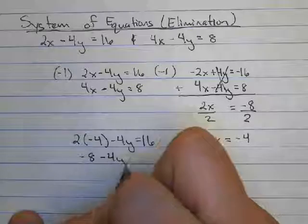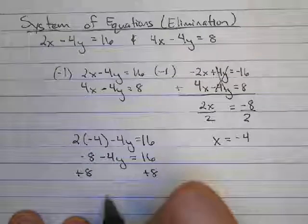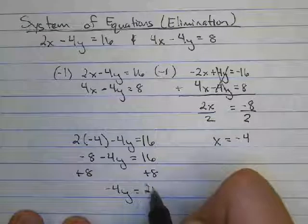Negative 8 minus 4y equals 16. Add 8 to both sides. Negative 4y equals 24.